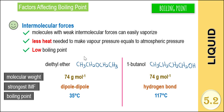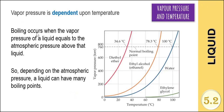Also, you could relate the factors that affect the intermolecular force that you learned in chapter 4 with this topic. Vapor pressure is dependent upon temperature. Boiling will occur when the vapor pressure of a liquid is equal to the atmospheric pressure above that liquid. So, depending on the atmospheric pressure, a liquid can actually have many boiling points.